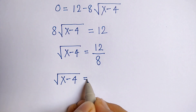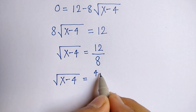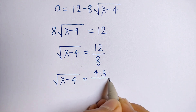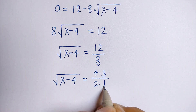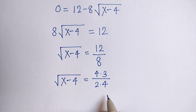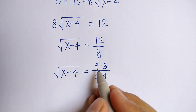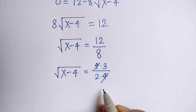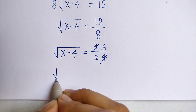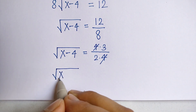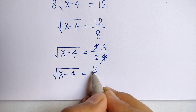We can write 12 as 4 into 3 and 8 as 2 into 4. Now the 4 and 4 cancel, leaving us with root x minus 4 is equal to 3 by 2.